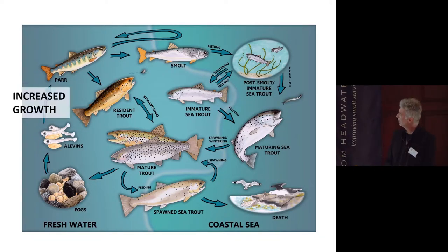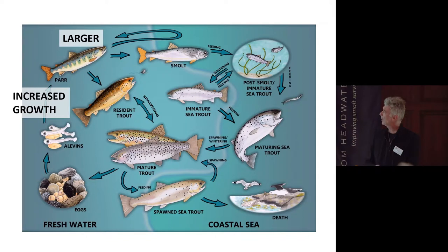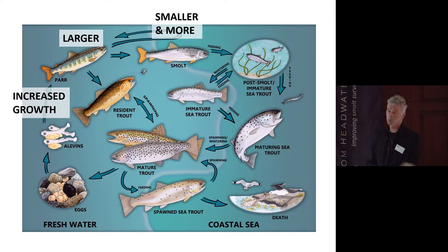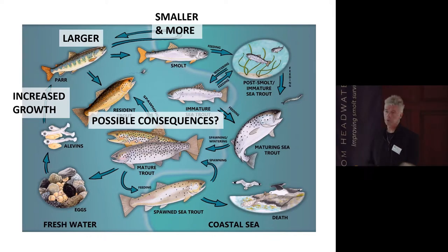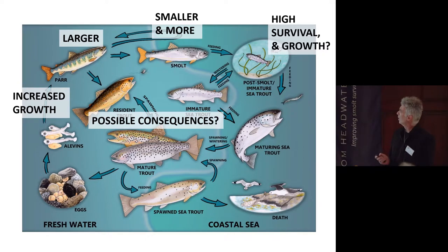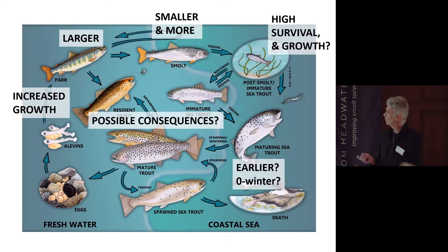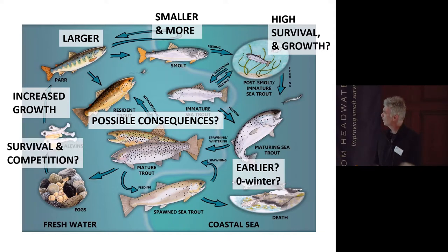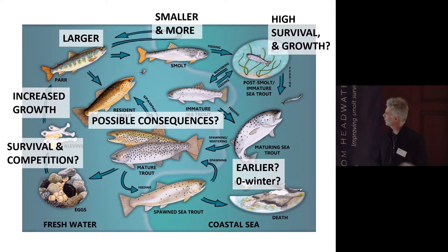So what's happening? We have increased growth, which makes the parr larger. It seems smolts will be smaller and more numerous. We don't really know the possible consequences in the long run — this needs both monitoring and modelling. There might be high survival and growth of these fish, they could return earlier as zero-winter fish, or there could be changes in survival and competition. There are all different scenarios we simply don't know yet.